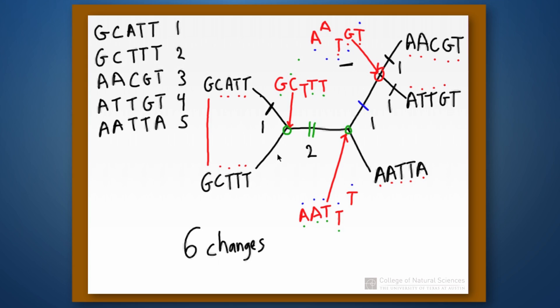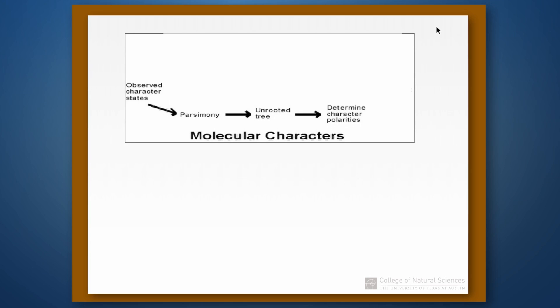We don't yet know whether this is the most parsimonious tree, because there are still another 14 topologies to evaluate with the same procedure. If the other 14 topologies have seven or more changes, this would be the most parsimonious tree — but we don't know that yet. You can see why we would get a computer to do this whenever possible, because it is quite tedious.